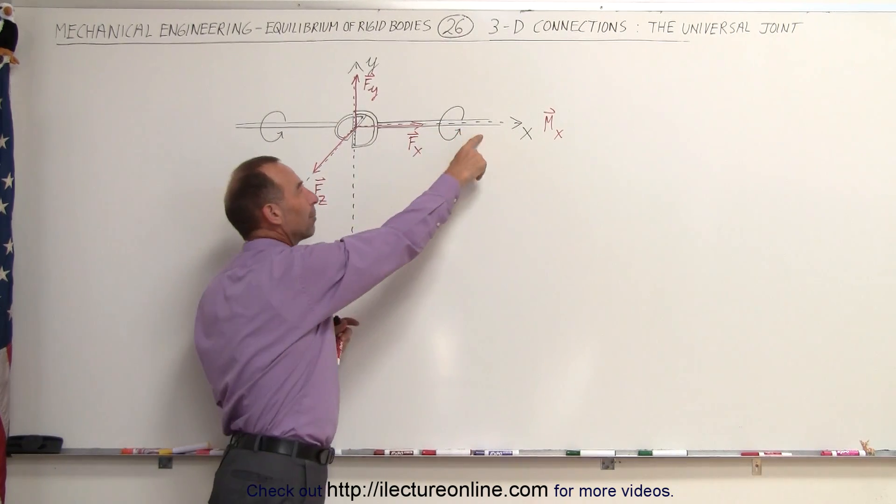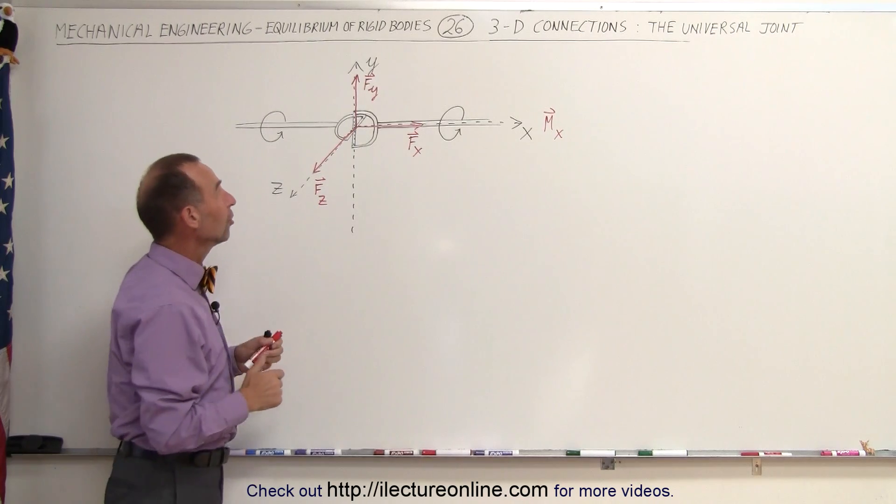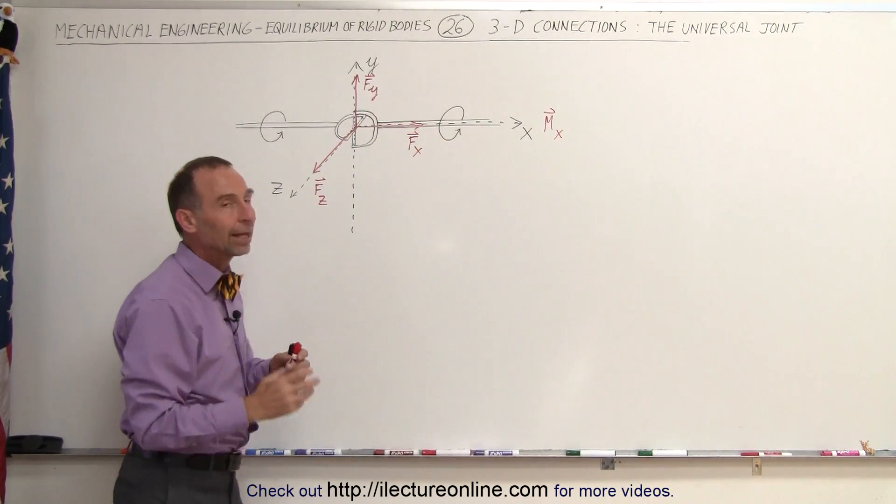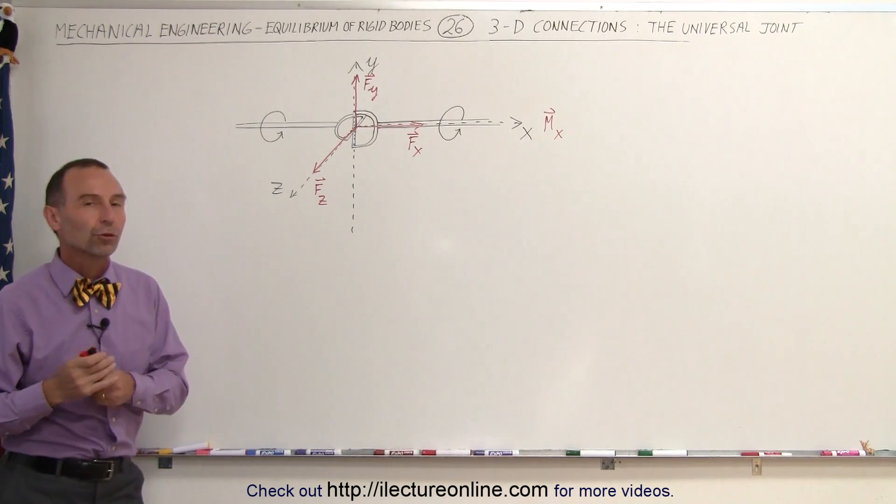And so there's a force applied to that particular axle. So now we have a three force component plus a moment created by this particular connection, the universal joint.